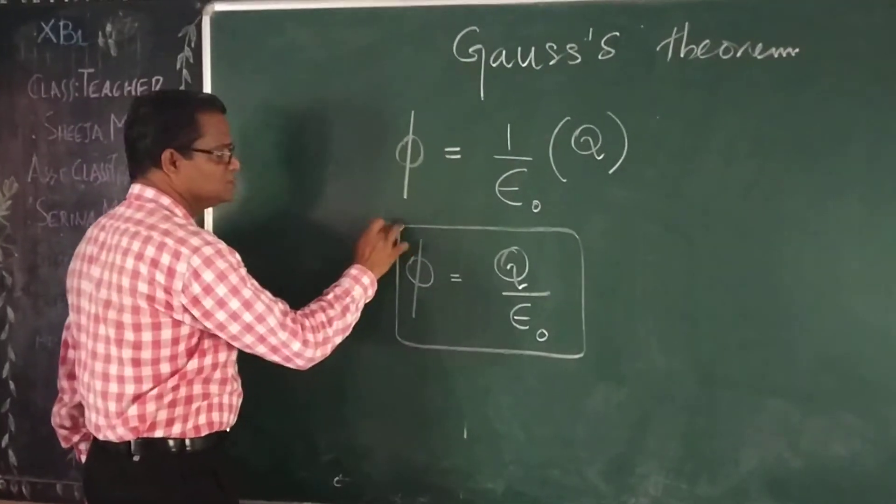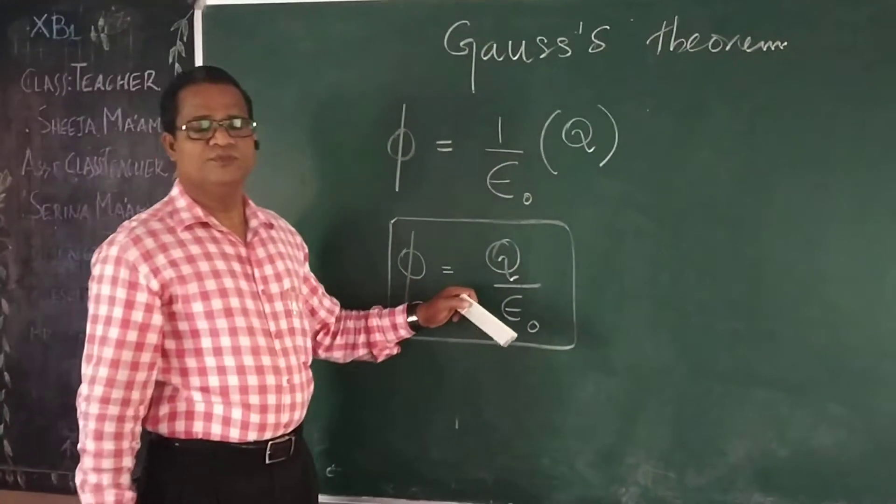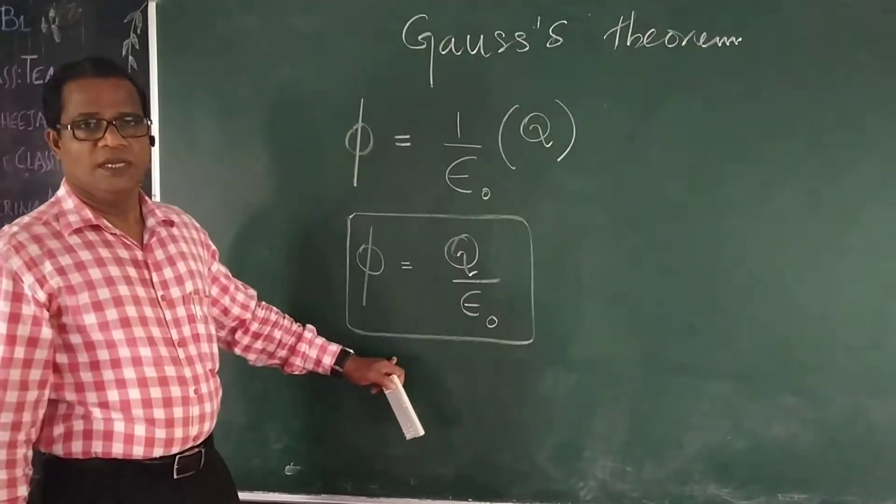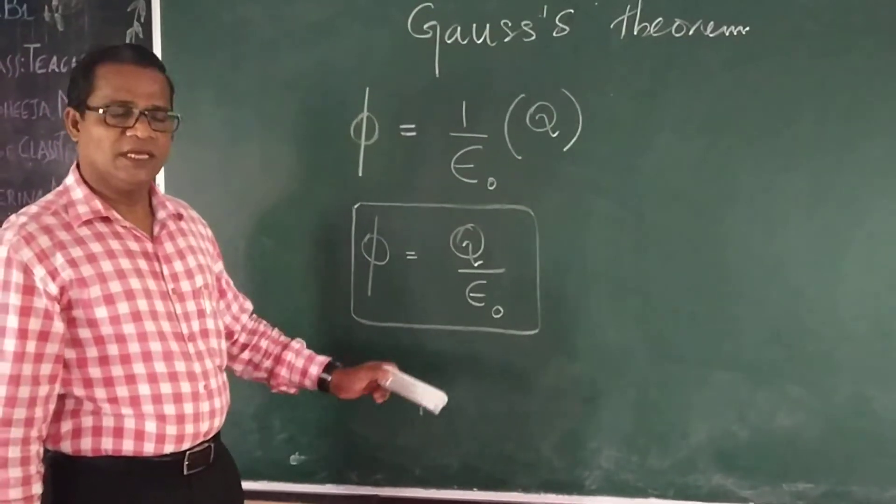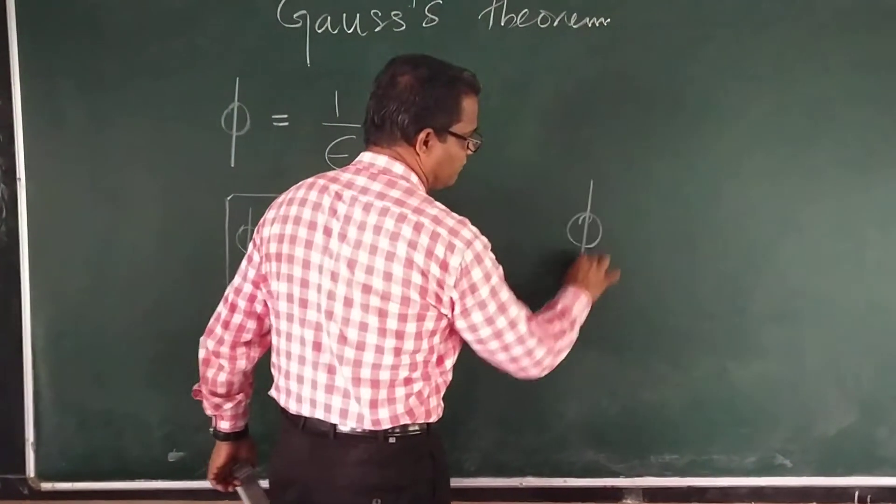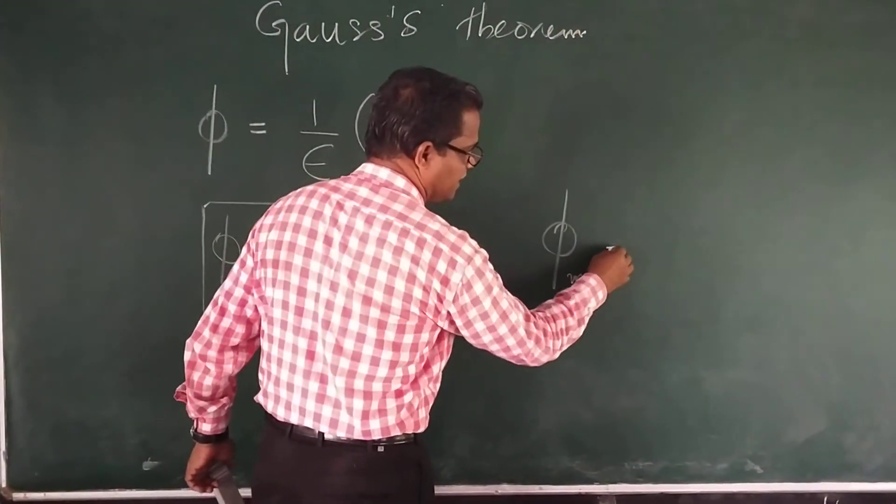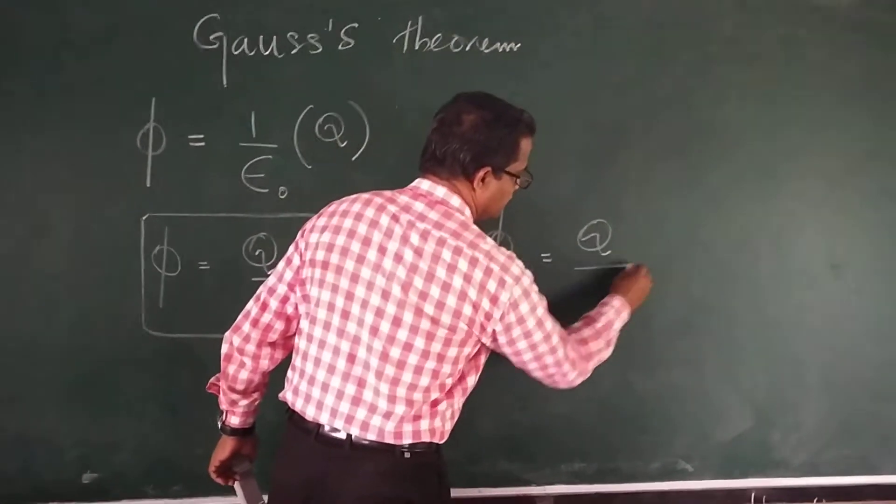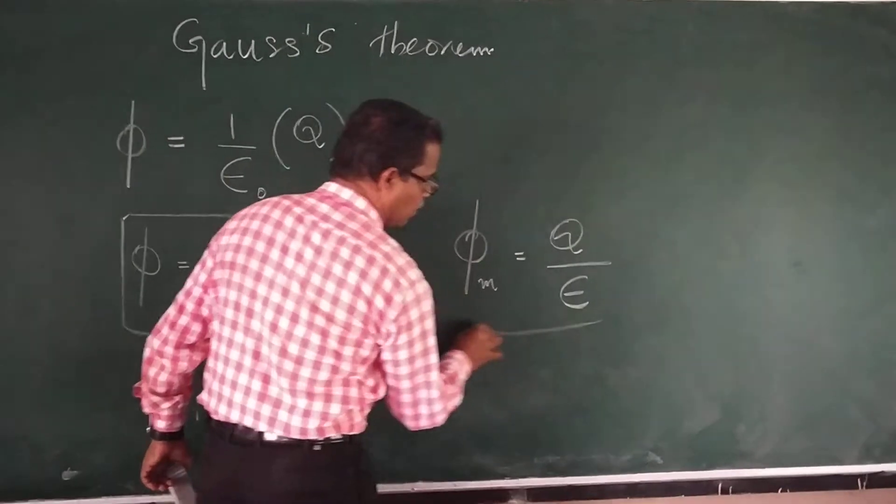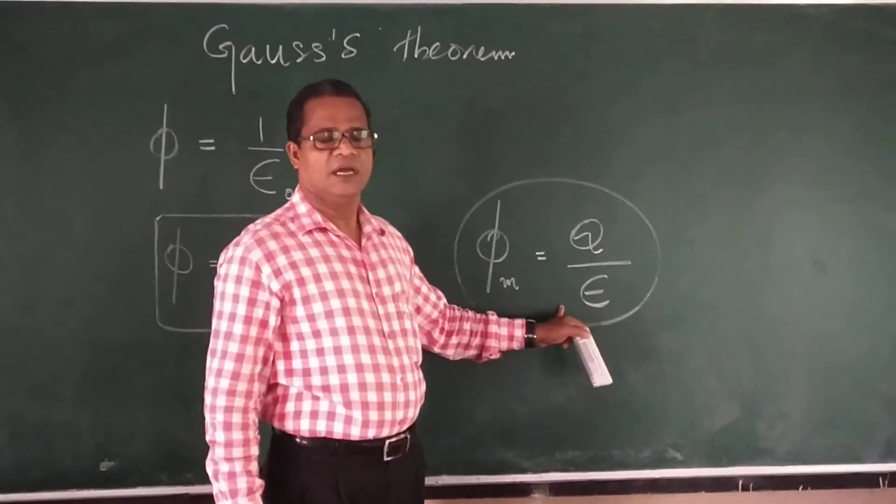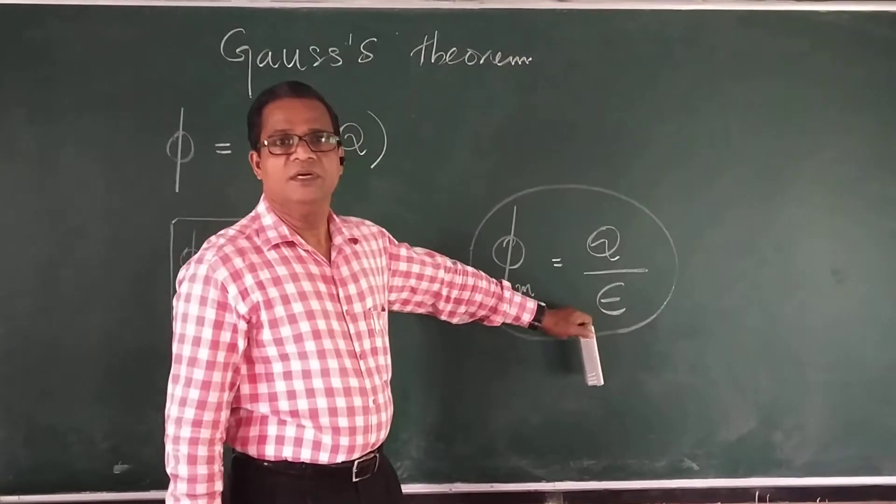This epsilon 0 is because we assume that the charge is in air or free space. If the charge is kept in any other medium other than air or free space, then flux related to that medium will be equal to the charge Q divided by epsilon, where epsilon is the permittivity of the medium.